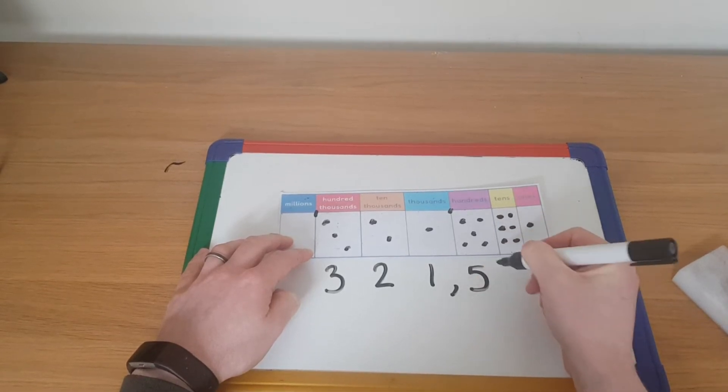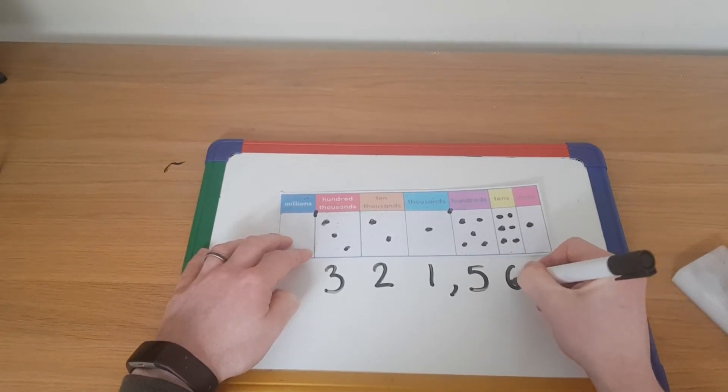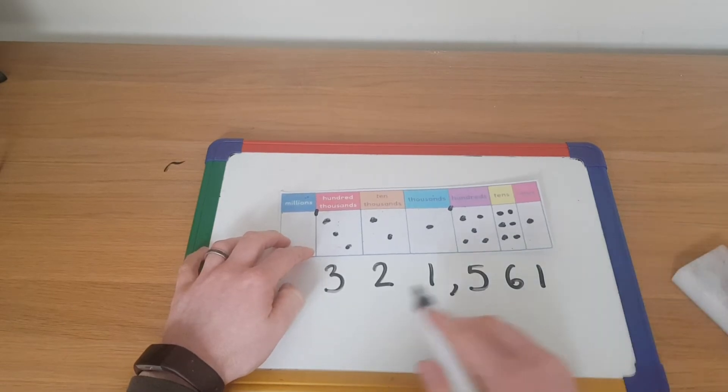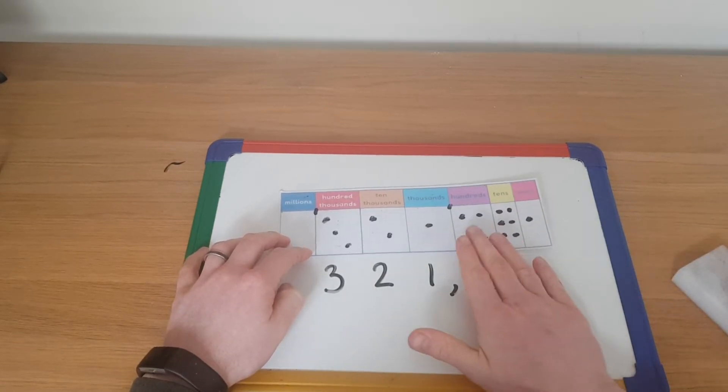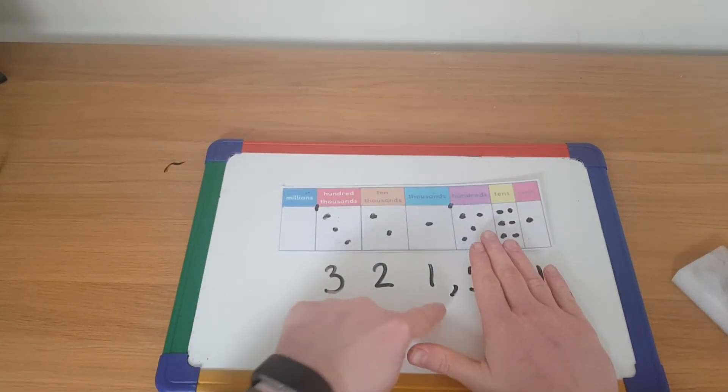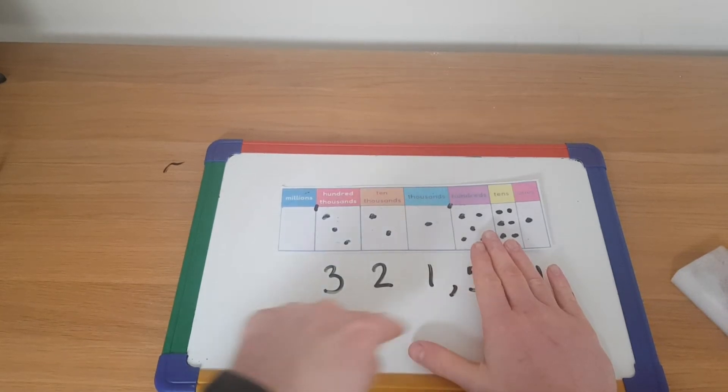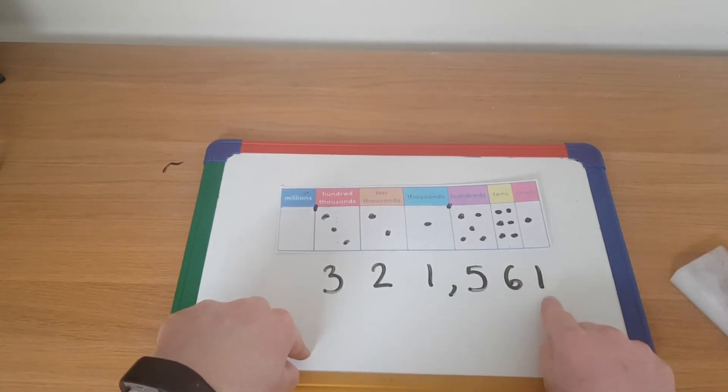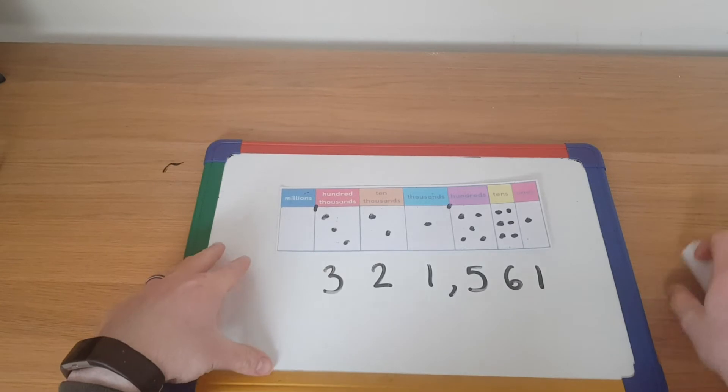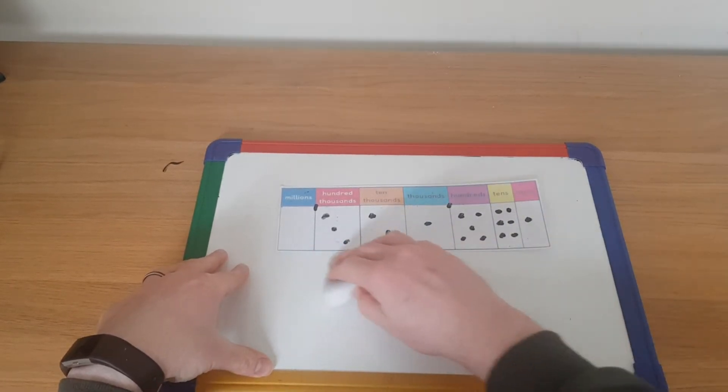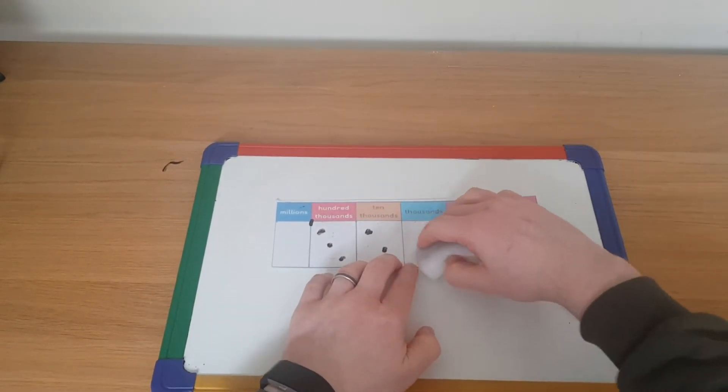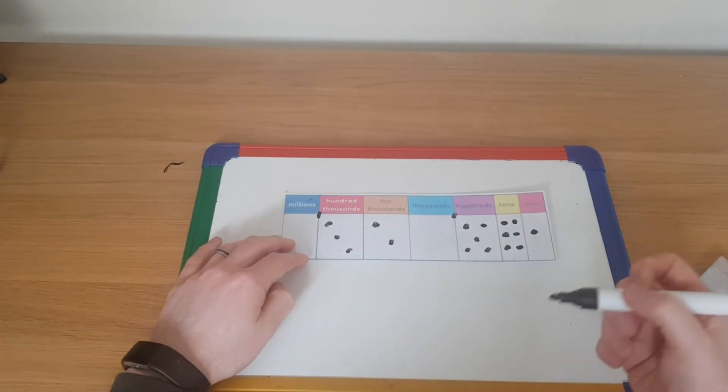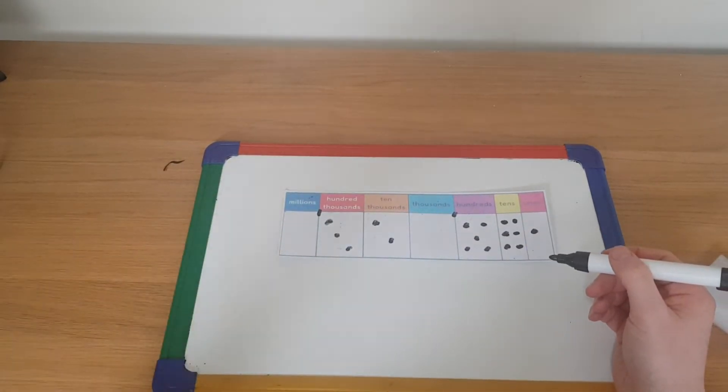So to say that number then, I'll cover that up. Three hundred and twenty-one thousand. That's what that comma's telling me to say, five hundred and sixty-one. But what happens then if one of these columns has a zero in it? Let's put it there. How would I then write that number? Have a go writing that number?